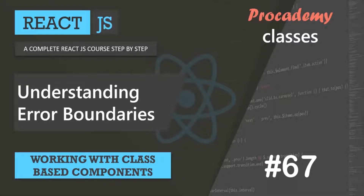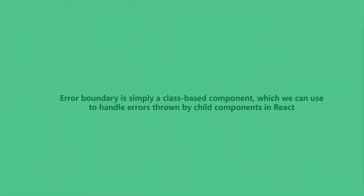In this lecture, let's learn what Error Boundaries are and what we use them for. An error boundary is simply a class-based component which we can use to avoid React applications getting crashed when an unexpected error occurs, and to show some meaningful message to the user. Sometimes there are errors which can occur unexpectedly and cannot be prevented — for example, when sending an HTTP request and the server is down or there is no internet connection. As a developer, we should make our application prepared for such situations, and for that we can use Error Boundaries.